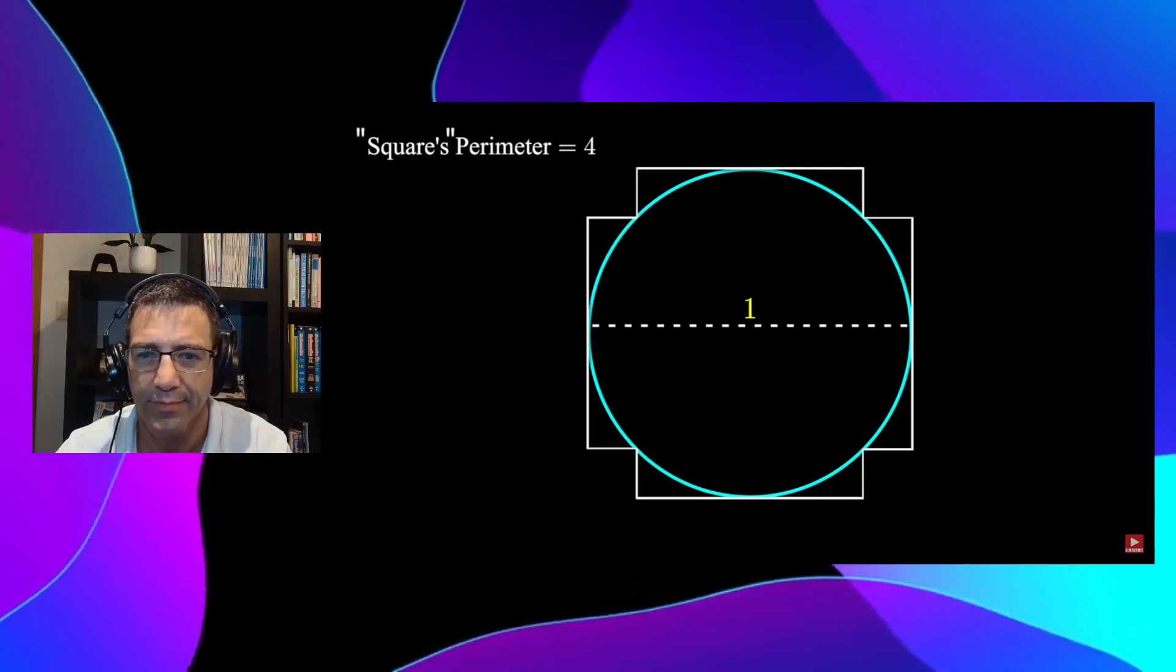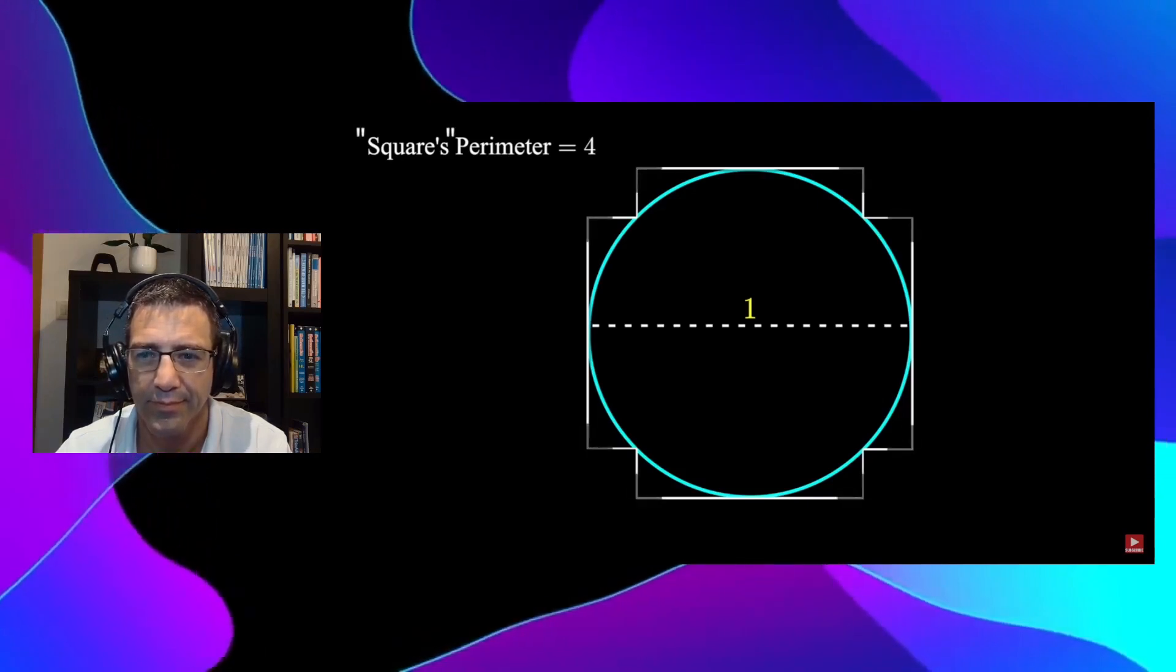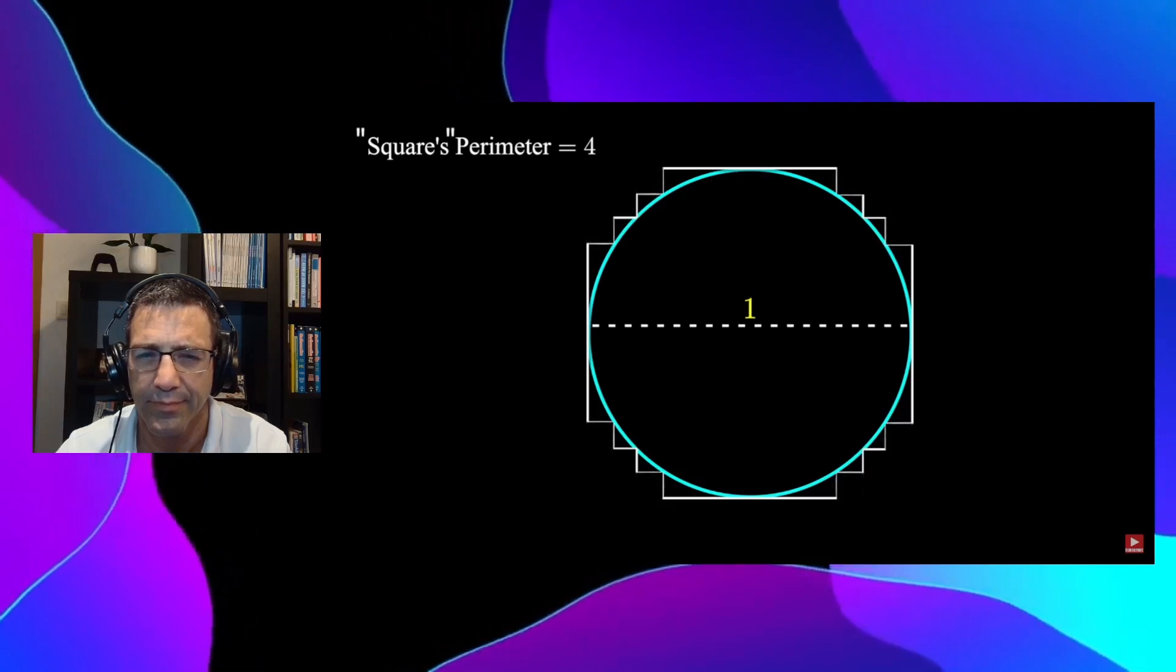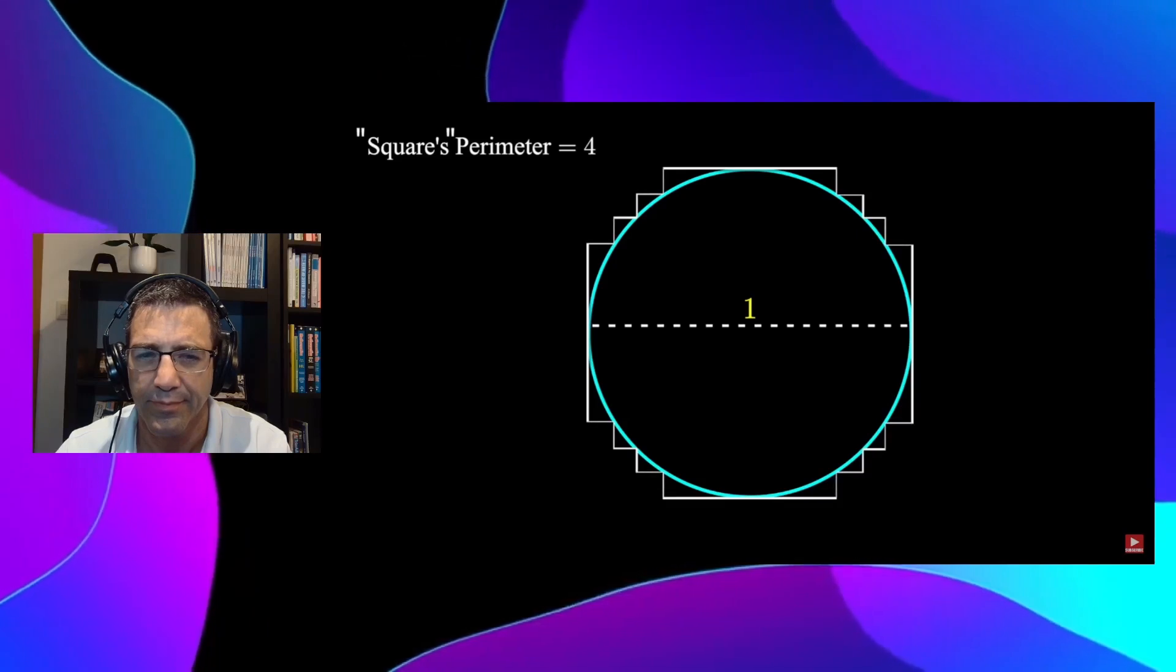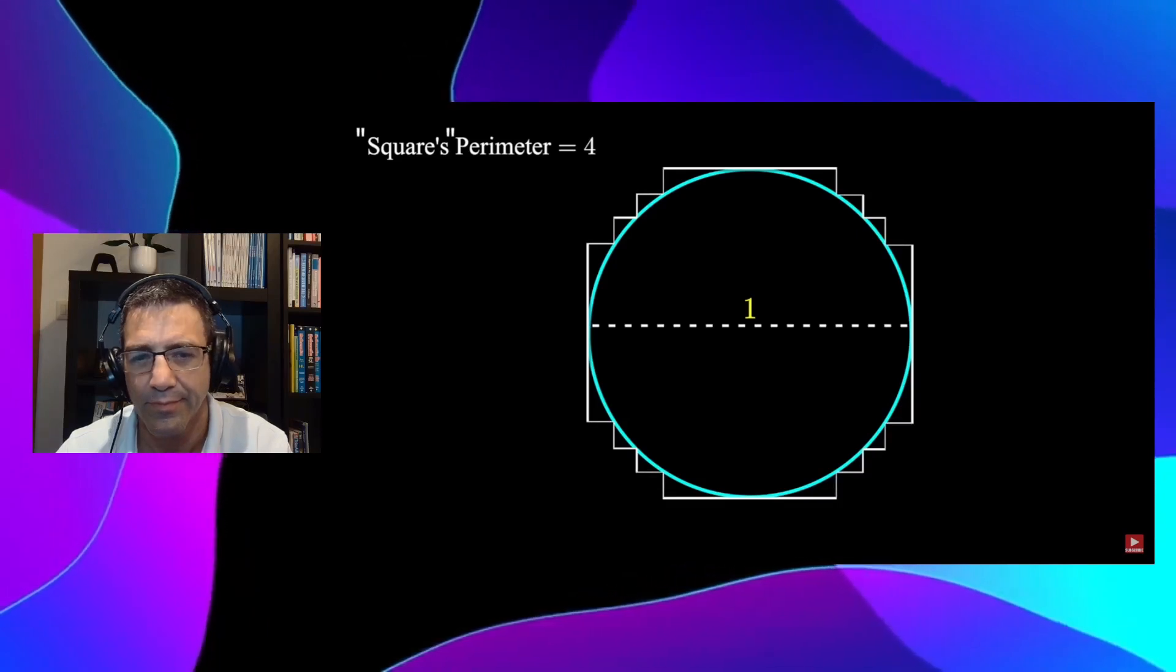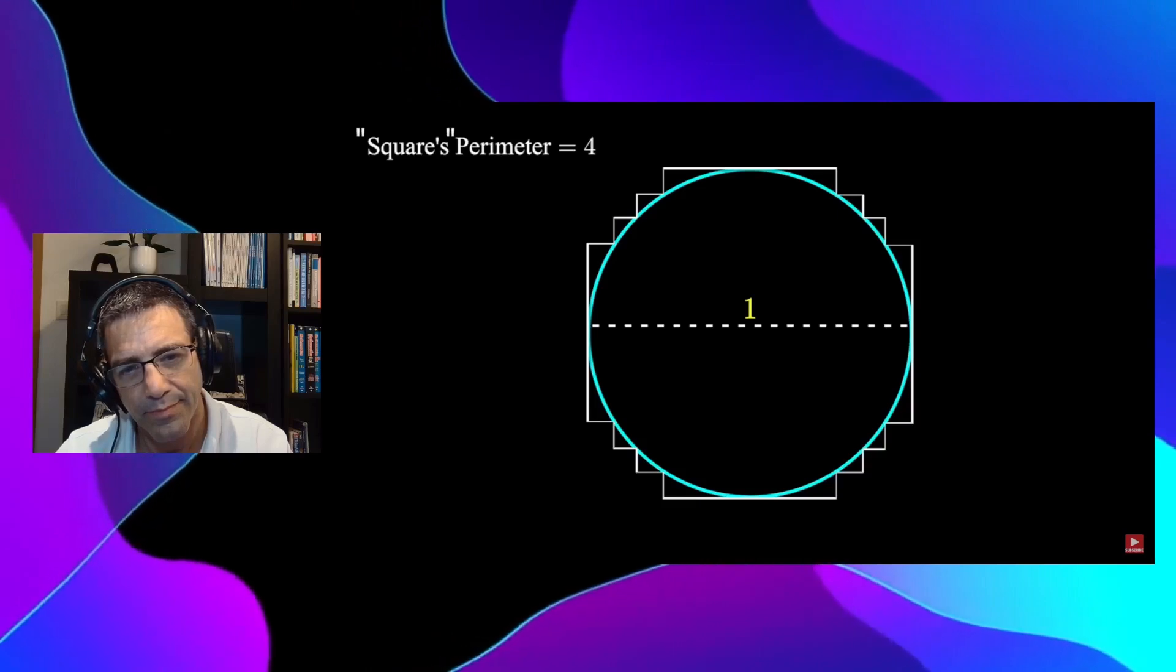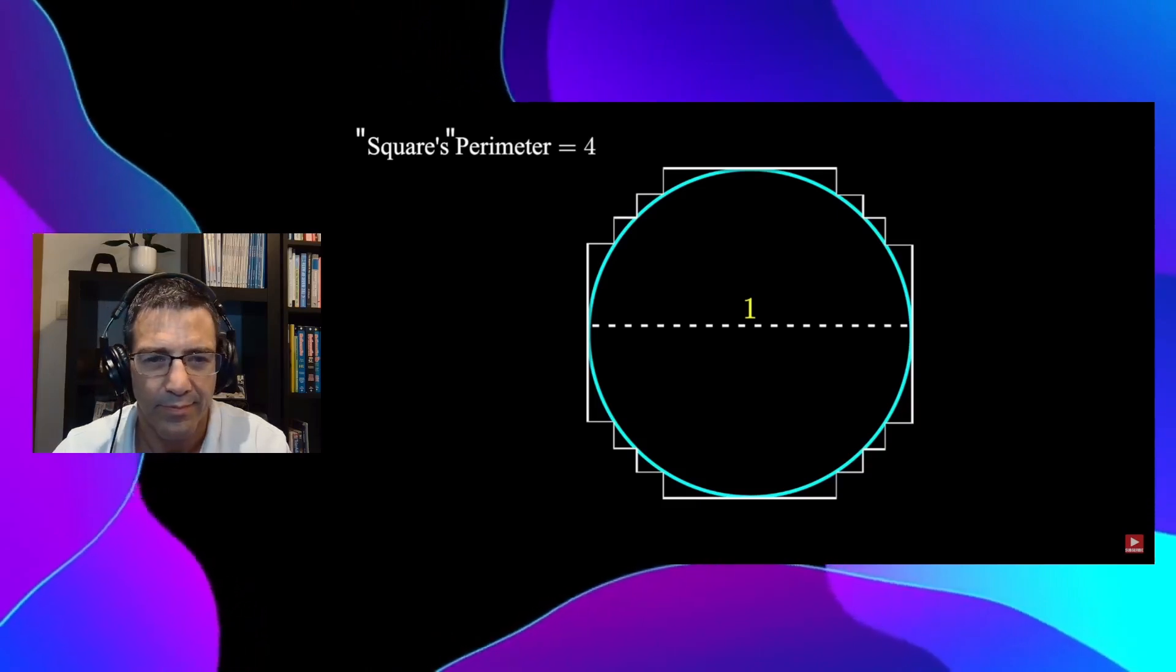If we keep removing the corners in this fashion, the perimeter of the shape around the circle is still 4. Repeat this out to infinity and we'll see that this process maps the shape onto the circumference of the circle.